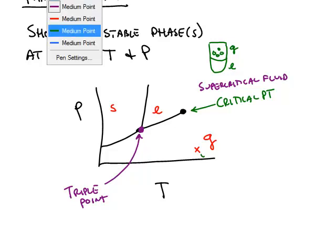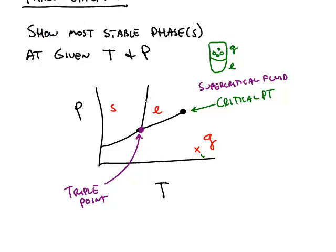If you're on a line in a phase diagram, such as this point, that means you have solid and liquid in this case, both stable. Solid and liquid would be stable at the melting point. And the melting point is the same temperature as the freezing point. It just depends on which way you're moving from solid to liquid or liquid to solid.